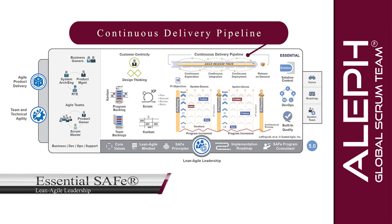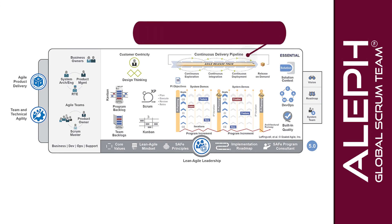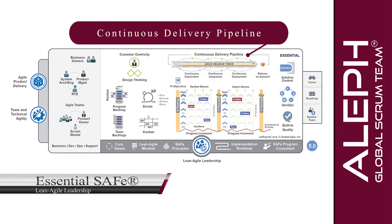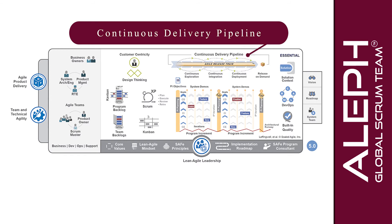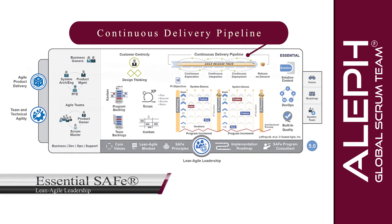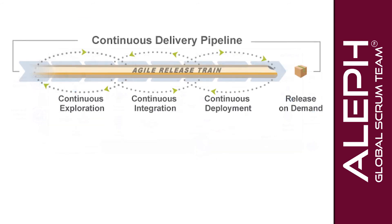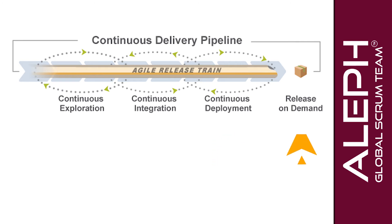The continuous delivery pipeline represents the workflow activities and automation needed to create and nurture a new piece of functionality from the birth of a concept to a releasable value to the end user. It's split up into four parts: continuous exploration, continuous integration, continuous deployment, and release on demand.